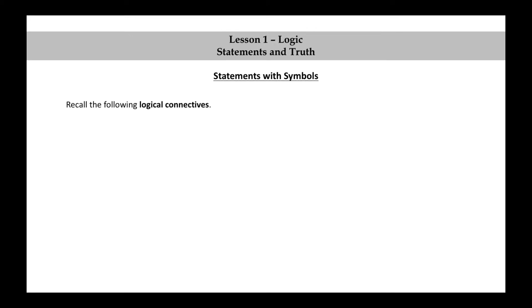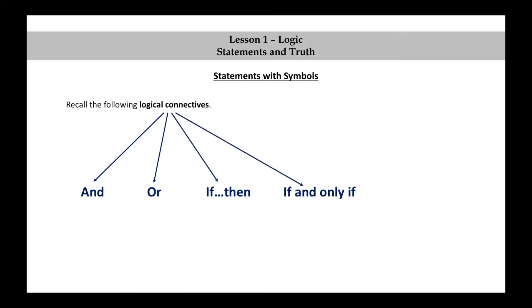Recall the following logical connectives: and, or, if-then, if and only if, and not. For each of these logical connectives, we have an associated symbol. For and, we have a wedge-shaped symbol. For or, we use a V-shaped symbol. If-then comes with a right arrow. If and only if, a double-headed arrow. And not, we have a horizontal line segment attached to a smaller vertical segment.